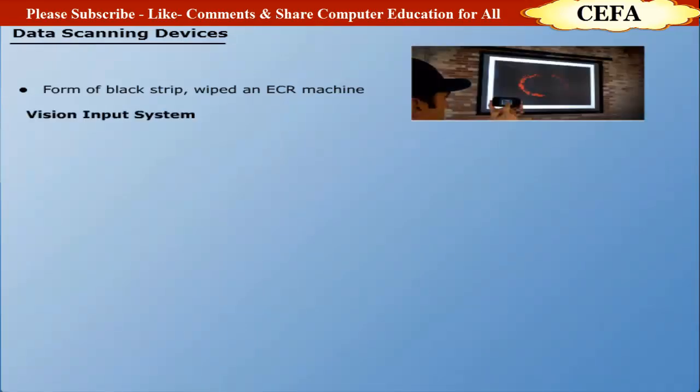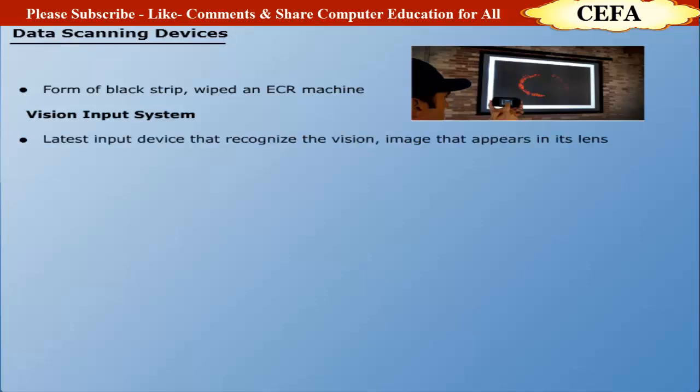Vision input system: A vision input system is one of the latest input devices that recognizes a vision image which appears in the range of its lens. These are specially used to design industrial robots.